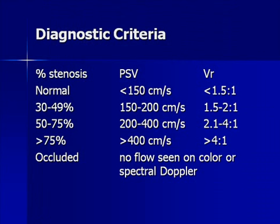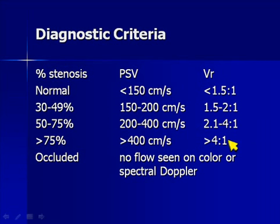In terms of diagnostic criteria, there are no separate criteria for upper extremity vessels — we use the same criteria applied to the lower extremity. In general, these velocities are probably a little high for upper extremity arteries, but what we really use is the velocity ratio. A ratio of 2:1 indicates approximately 50% stenosis. When the ratio reaches about 4:1, we're dealing with approximately 75% stenosis. This almost always holds true.